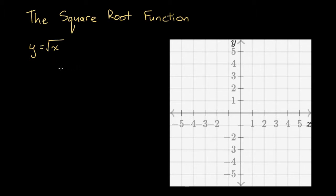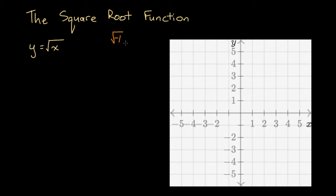The first thing we should consider is the domain, because whenever we're looking at anything involving a square root, it's often interesting to look at the domain of the function. Domain is all the valid inputs for this function — all the x values we could input and get a valid y output back. If we have the square root of minus 1, we can't ascribe a real number to that. There's no real number it represents, so for our purposes, this is undefined.